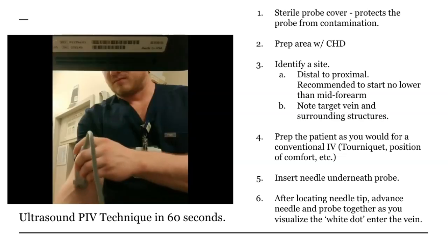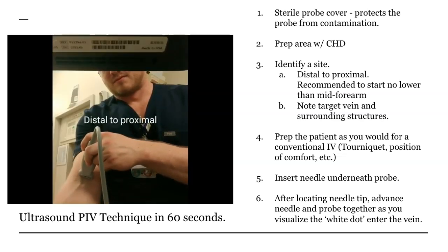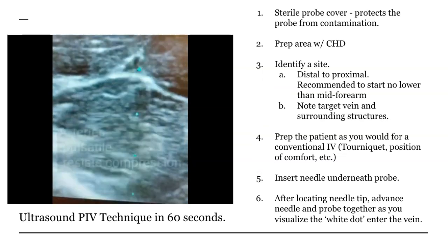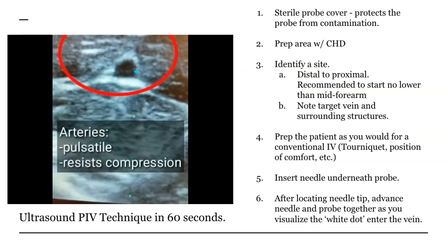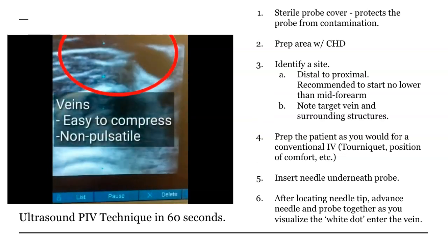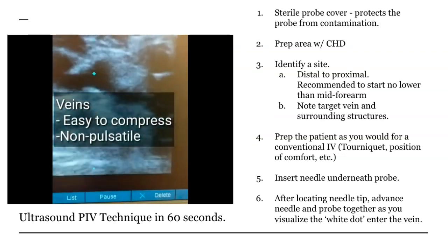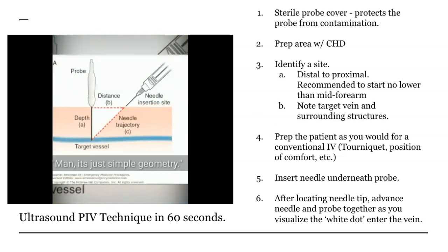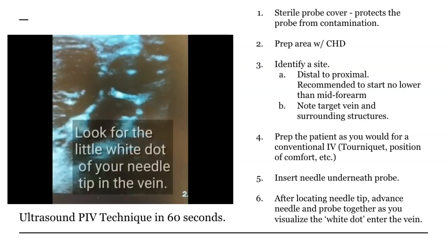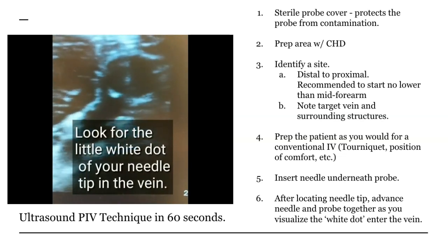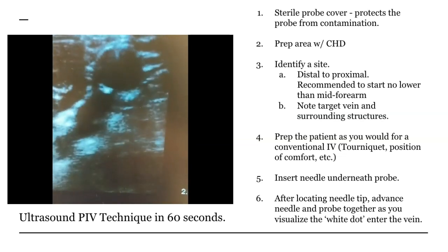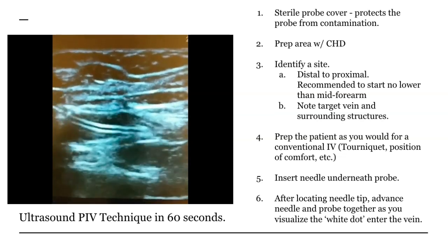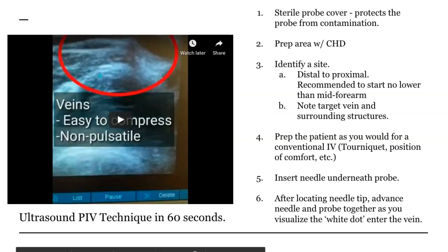Lube jelly is cheap and readily available. Use a distal to proximal technique to identify veins and arteries — remember, arteries are pulsatile and non-compressible, veins are easy to compress and non-pulsatile. Deeper is better for getting access to deeper veins — it's basic geometry. The white dot corresponds to the needle inside the vein. Once I get access to the vein, I decrease my angle and advance the catheter.